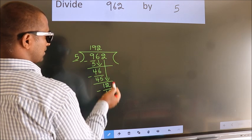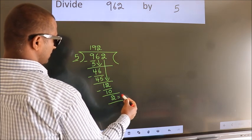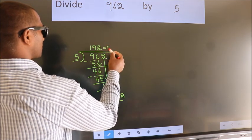No more numbers to bring down. So we stop here. This is our remainder. This is our quotient.